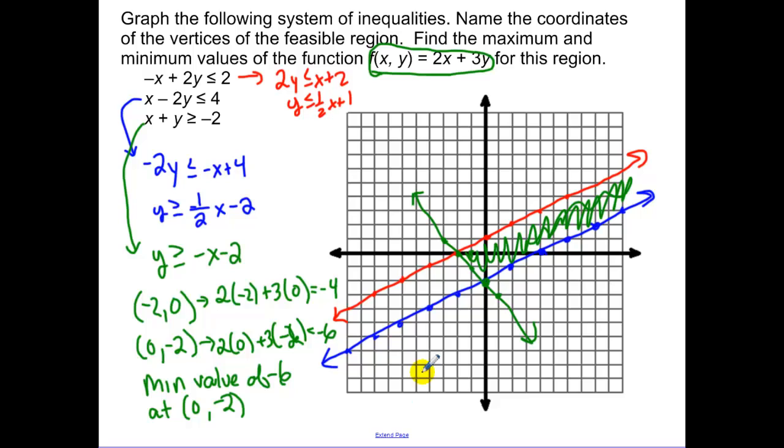So we know that this is going to get us a min value of negative 6 at the point 0, negative 2. Now think about it. If I'm plugging in any point up here, as I plug in any of these points, say this point here that is 10, 4. If I plug in 10, 4 or anything in this shaded region, that's going to get me a number that's even bigger. So there's no max value because we're unbounded.